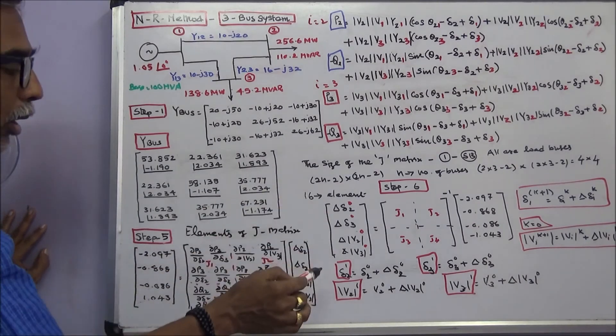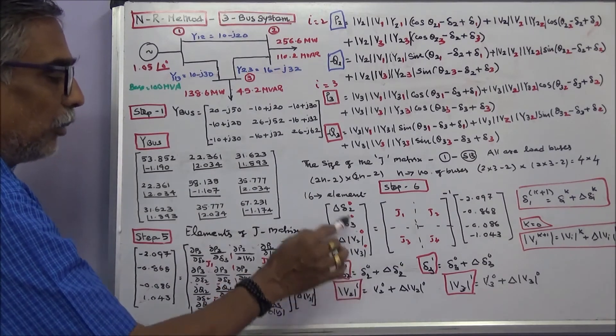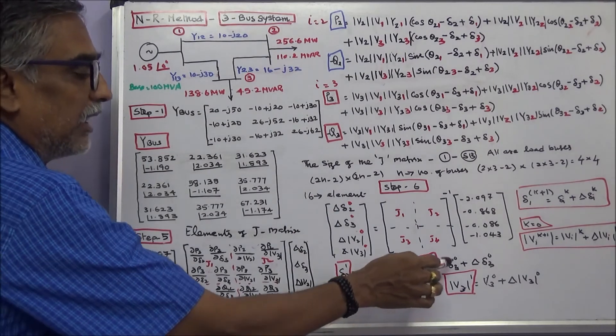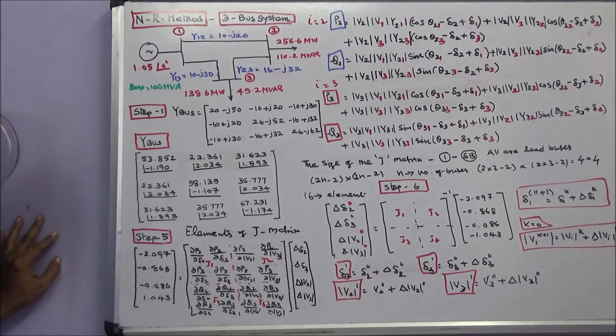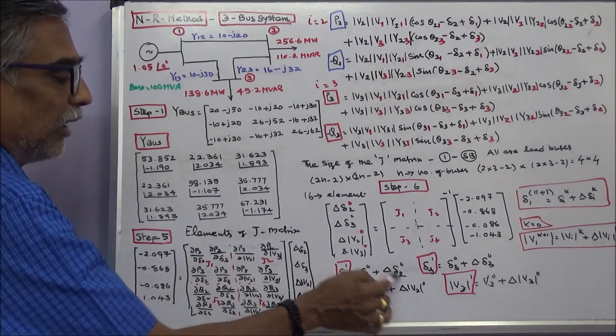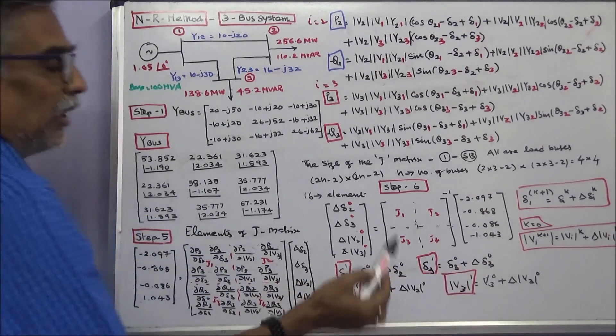Once you know these values, the first iteration value is initial value plus this value. Similarly, delta 3 first iteration value is initial value plus this value. First iteration V2 value is initial one plus this value. Similarly V3 first iteration value is initial value 1 plus this value.